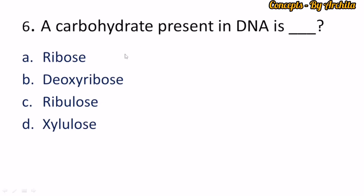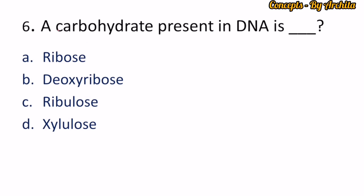Question 6 is very simple: a carbohydrate present in DNA. The answer is hidden in the full form itself — deoxyribonucleic acid. So DNA contains deoxyribose sugar, while RNA contains ribose sugar because its full form is ribonucleic acid. So option B is correct.